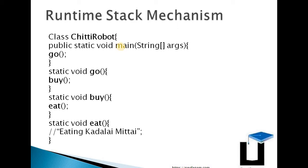If you have the robot, you use the robot. The main method calls another method. Let's say when the robot does one method, it calls the main method. We have methods calling each other: the main method goes to go, go goes to buy, and buy goes to eat. So we have these chained method calls: main, go, buy, and eat — our set of methods.